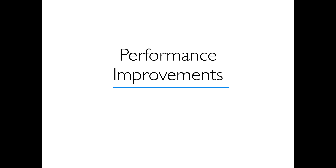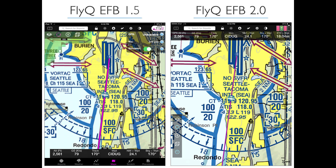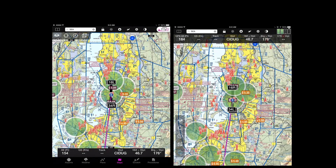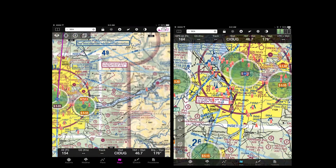Performance improvements. There are a lot of performance improvements in this version, and probably the best way to show that is with video — both from FlyQ EFB 1.5 and then on the same device, FlyQ EFB 2.0. Before we begin the video, take a look at the difference in map quality: version 1.5 on the left, version 2.0 on the right. Everything is much clearer, much sharper, much easier to read on 2.0. So it's really not just about the speed of the map, but the quality and legibility as well. In the video, with version 2.0 on the right, the frame rate is much smoother and the maps render quite a bit faster.